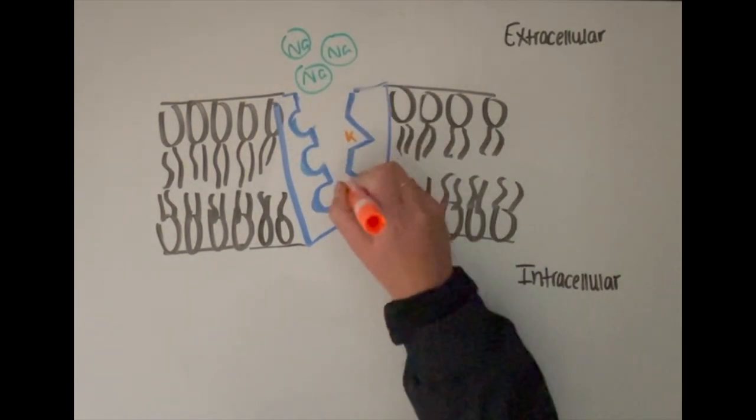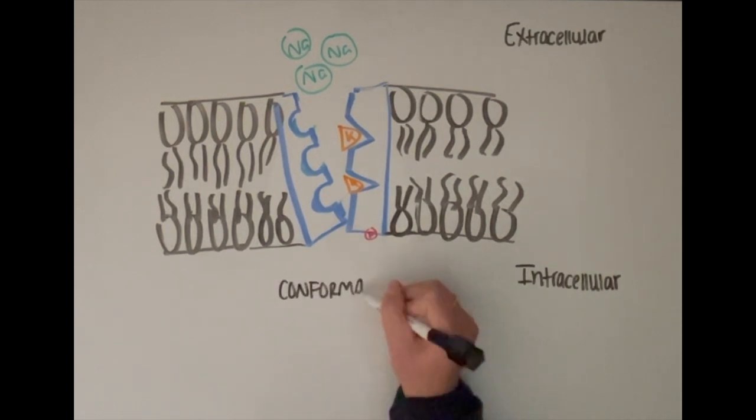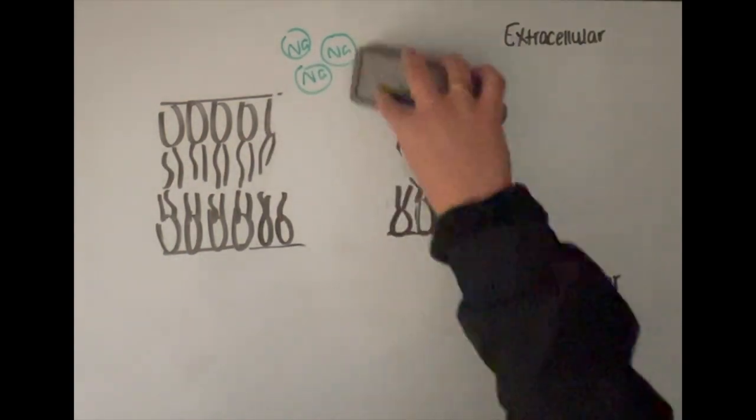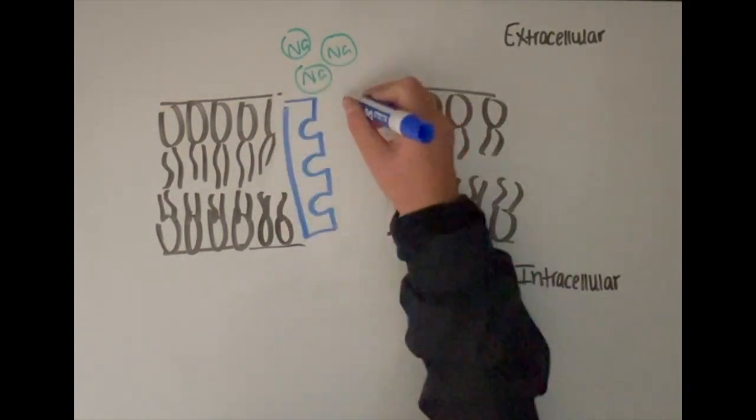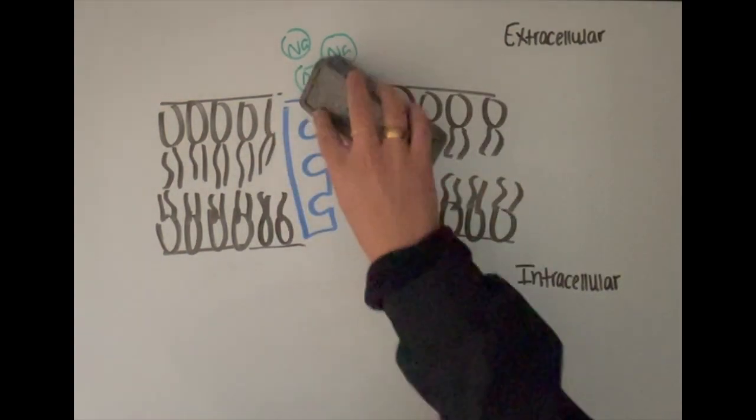Following the removal of the three sodium and the attachment of the two potassium, the pump undergoes conformational changes yet again, closing on the extracellular side and opening on the intracellular side back to its original shape.